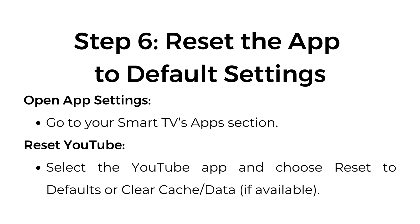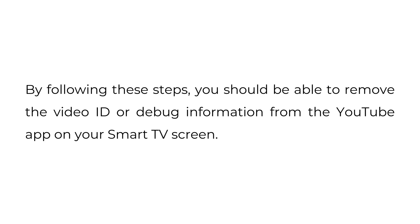Step 6: Reset the app to default settings. Open App Settings and go to your smart TV's Apps section. Select the YouTube app and choose Reset to Default or Clear Cache Data, if available. By following these steps, you should be able to remove the video ID or debug information from the YouTube app on your smart TV screen.